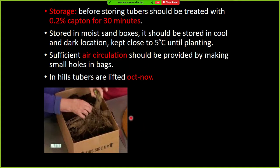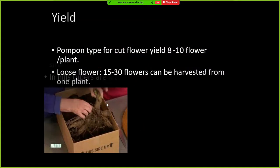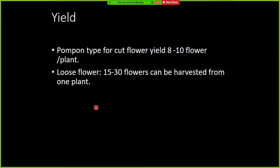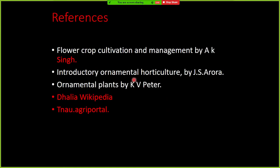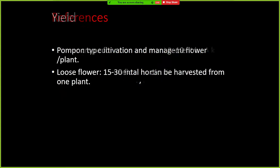In hilly conditions, tubers should be lifted during October and November. With respect to yield, pompon type cut flowers yield 8 to 10 flowers per plant. For loose flowers, 15 to 30 flowers can be harvested from one plant.